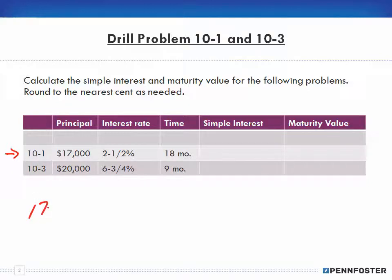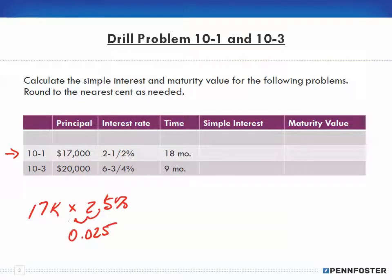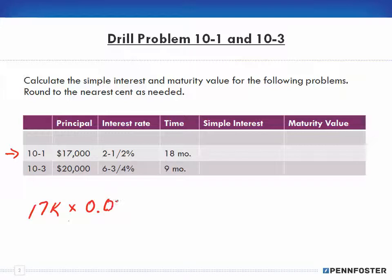I have $17,000 as my principal, and I'm going to multiply that times my interest rate: two and a half percent, or 2.5%, which in decimal form is 0.025. For the time frame, since this is 18 months, I'm going to put that over 12.